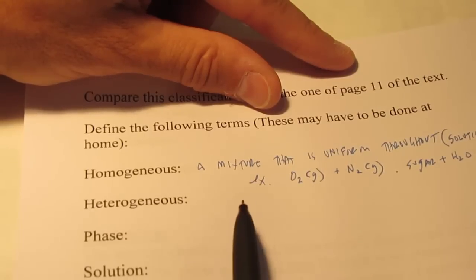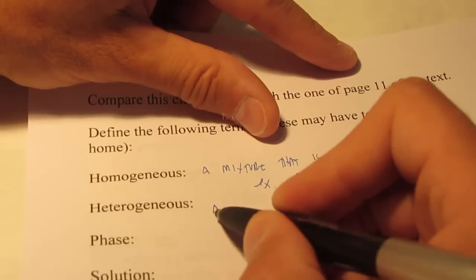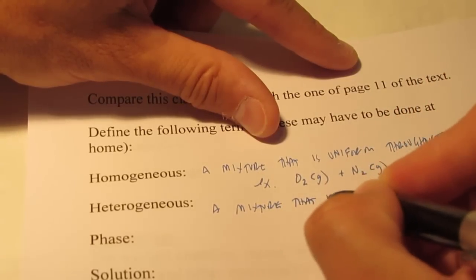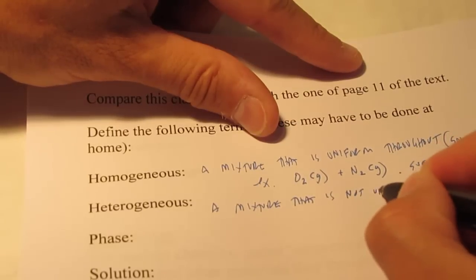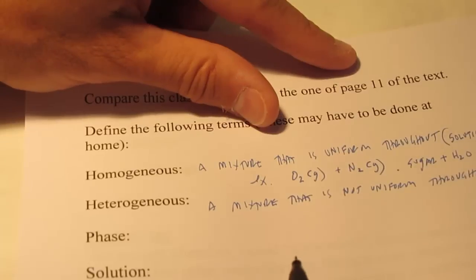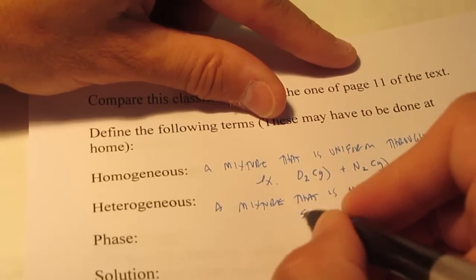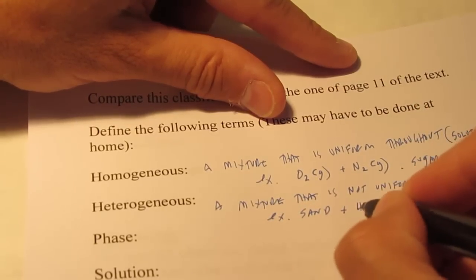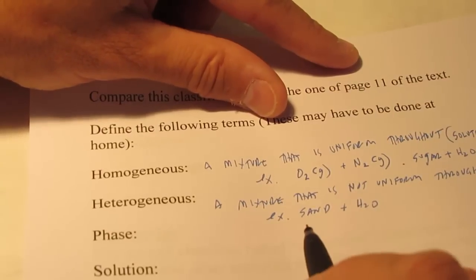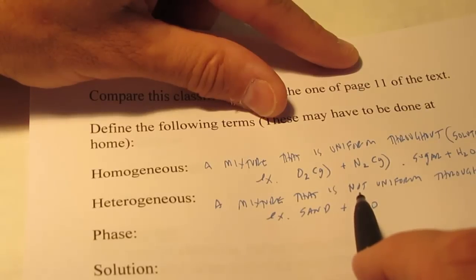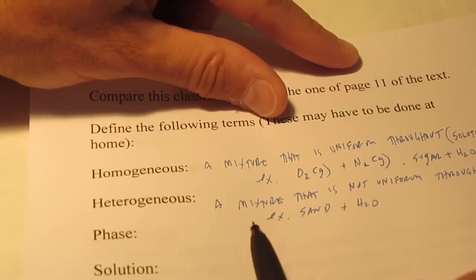Heterogeneous is a mixture that is not uniform throughout. So, if I were to take, let's say, a teaspoon of sand and mix that in a cup of water. No matter how much I stirred that up, that sand would not dissolve in the water. It would be in a non-uniform mixture. So, sand and water would be heterogeneous.